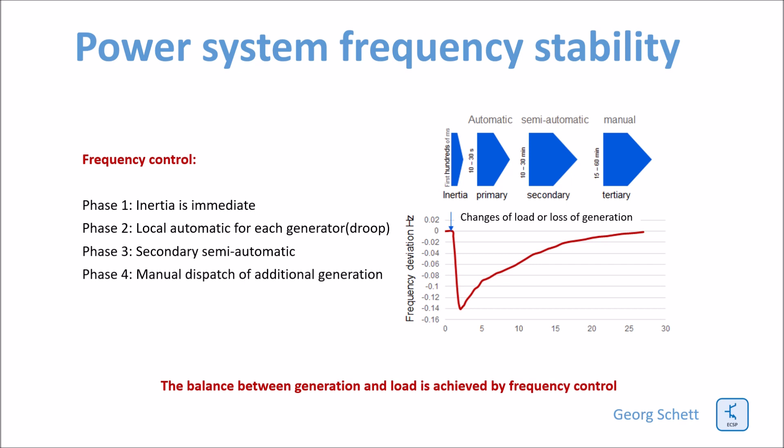In the third phase, there is a regional control system which controls the droop settings of the generators. And with this regional control, the region can fully meet the frequency, the nominal frequency.